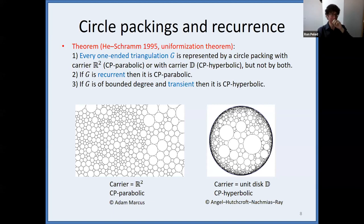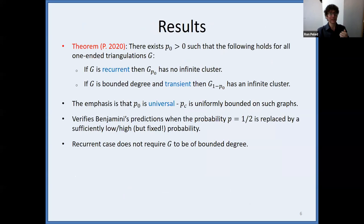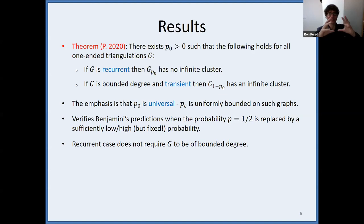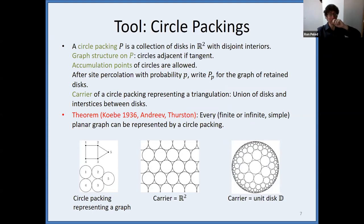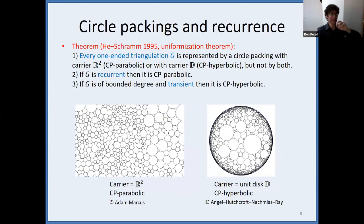So how does this help? My goal is to discuss percolation on one-ended triangulations. I'm going to circle pack them. If I take a graph and pass to its circle packing representation, doing site percolation on the original abstract graph or on this circle packing is the same — it's just another drawing. So I may as well do the percolation on this circle packing graph, and it turns out that there I can prove the result.